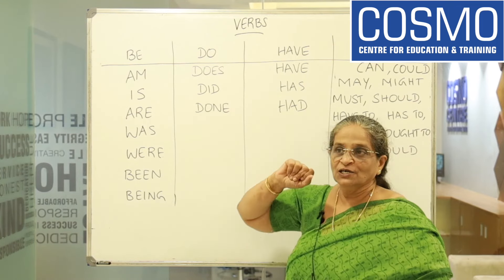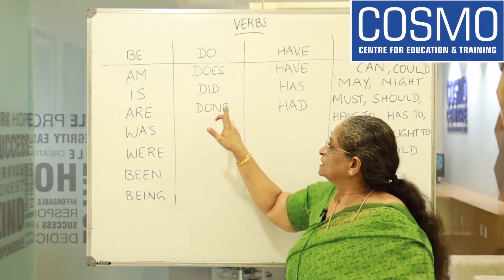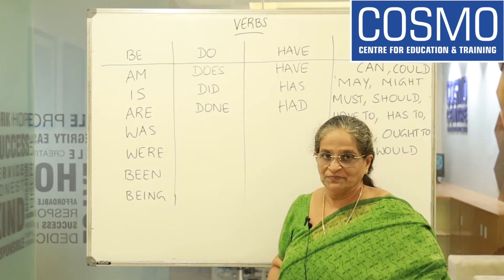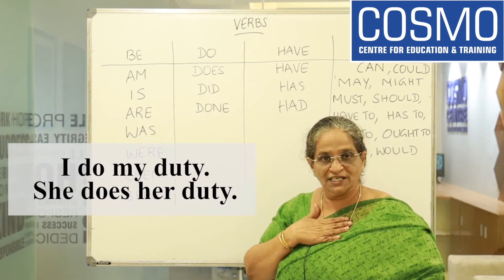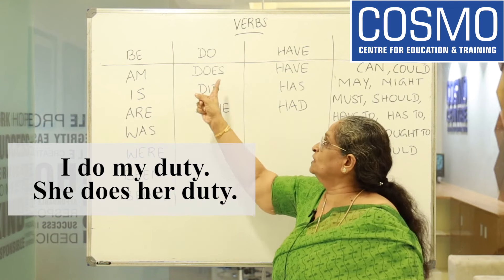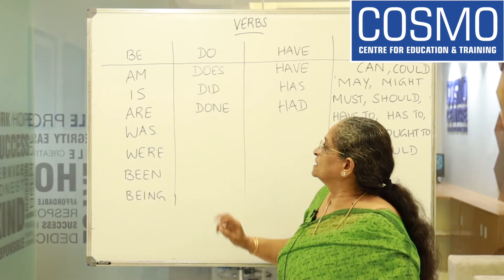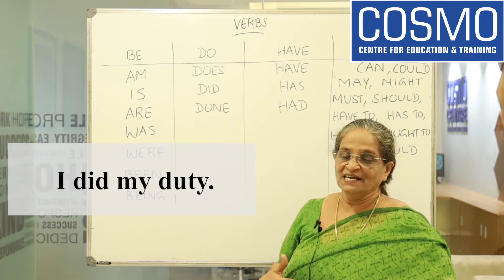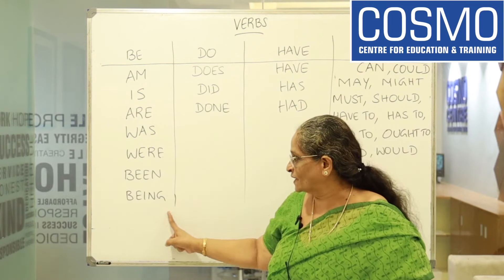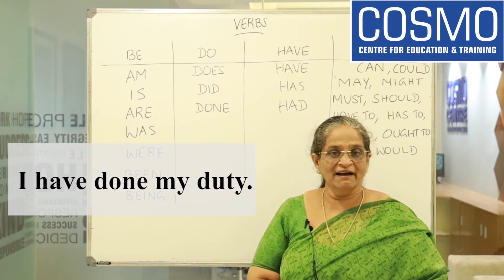The next form is DO. DO is used for plural, DOES for singular, DID for past. 'I do my duty.' 'She does her duty.' For past: 'I did my duty.' For the past participle DONE, you need HAVE, HAS, or HAD: 'I have done my duty.' This shows an action that has just finished.